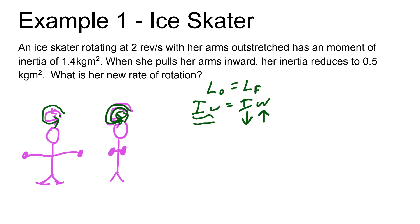This is going to decrease, which means her angular rotation is going to increase because we're trying to keep the momentum the same. Let's go ahead and do this. Her initial inertia is 1.4 kilogram meter squared. Her initial rotation rate is in revolutions per second. Depending on the problem, you may or may not have to convert this to radians per second.